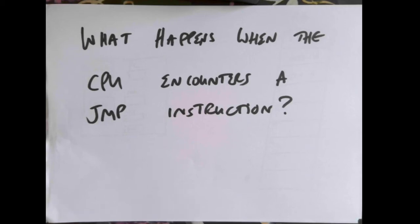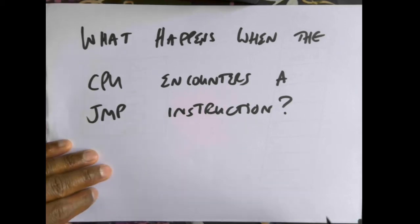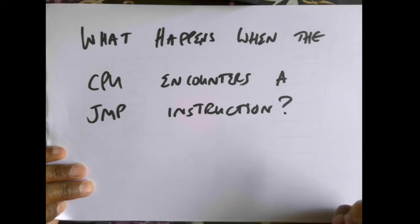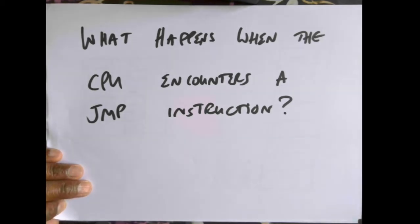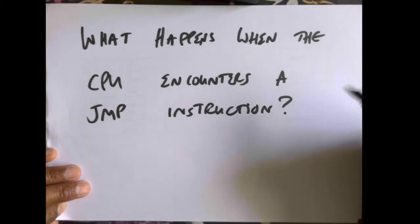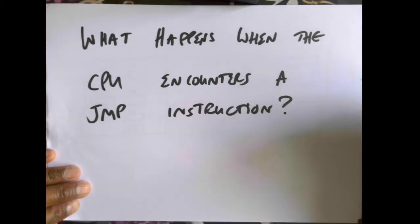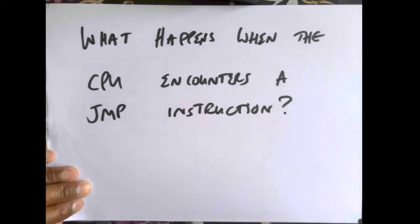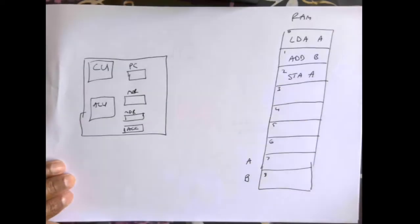I've had a couple of requests coming in over the years for explanations in class, and then I've just had one over email. We've been on holiday for a week and I've just spent a week reading, so I'm going to try getting my brain in gear for this one. What happens when a CPU encounters a jump instruction?